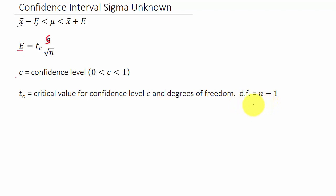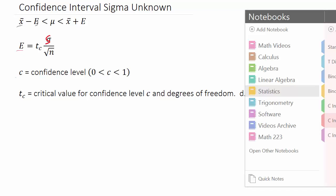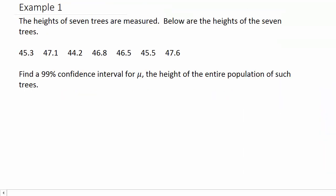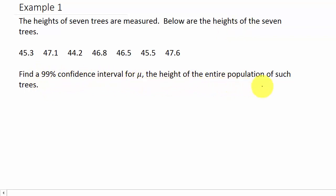Let's look at our example. The heights of seven trees are measured. Below are the measurements — we can say the heights are in inches. We want to find a 99% confidence interval for mu, the height of the entire population of trees.